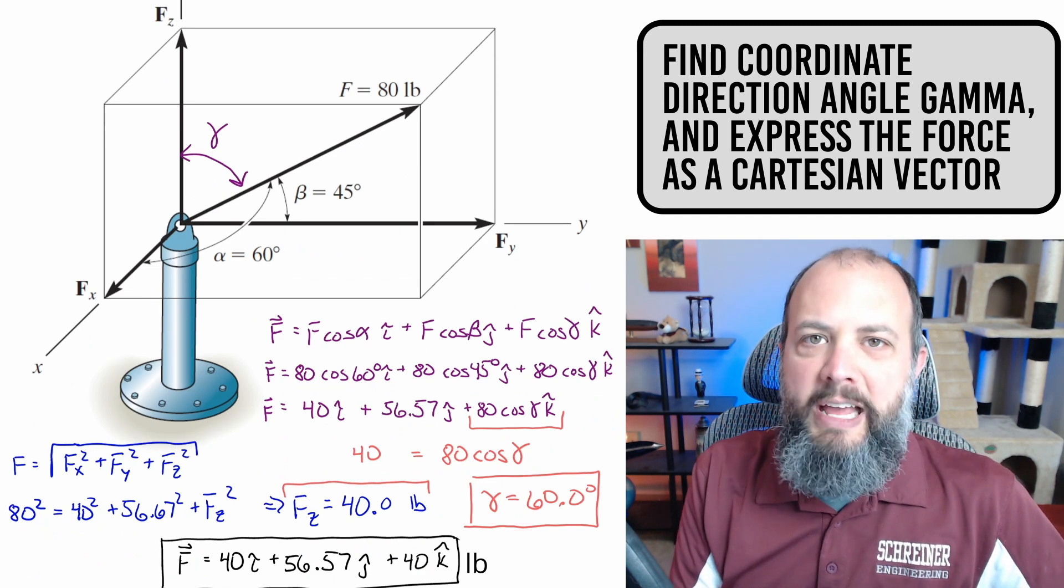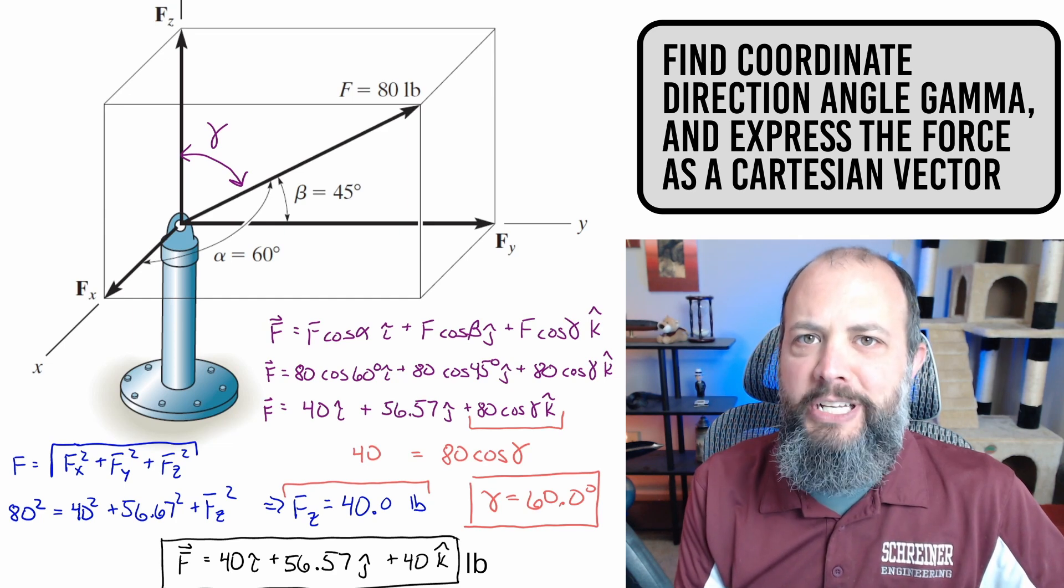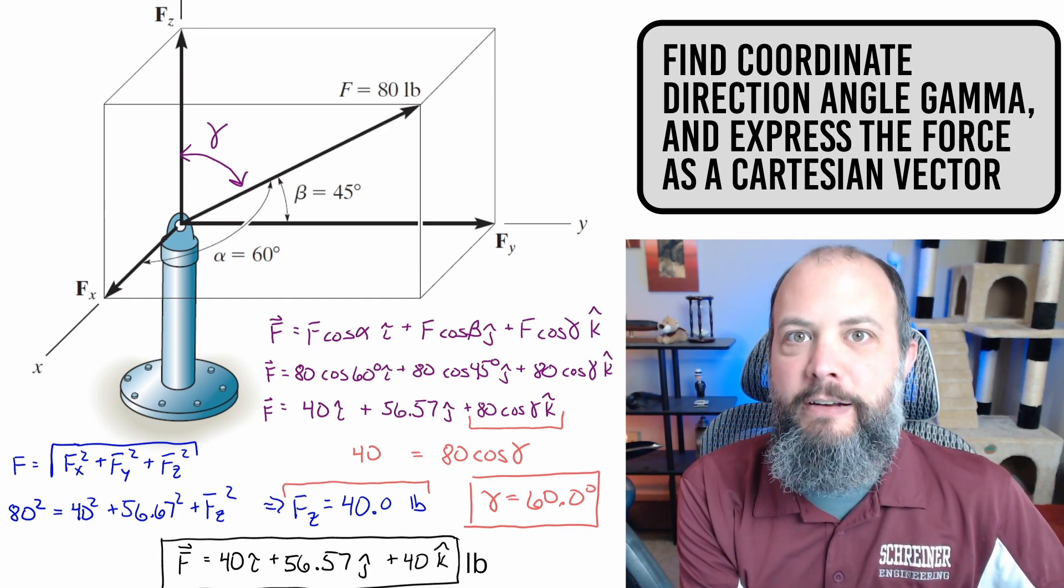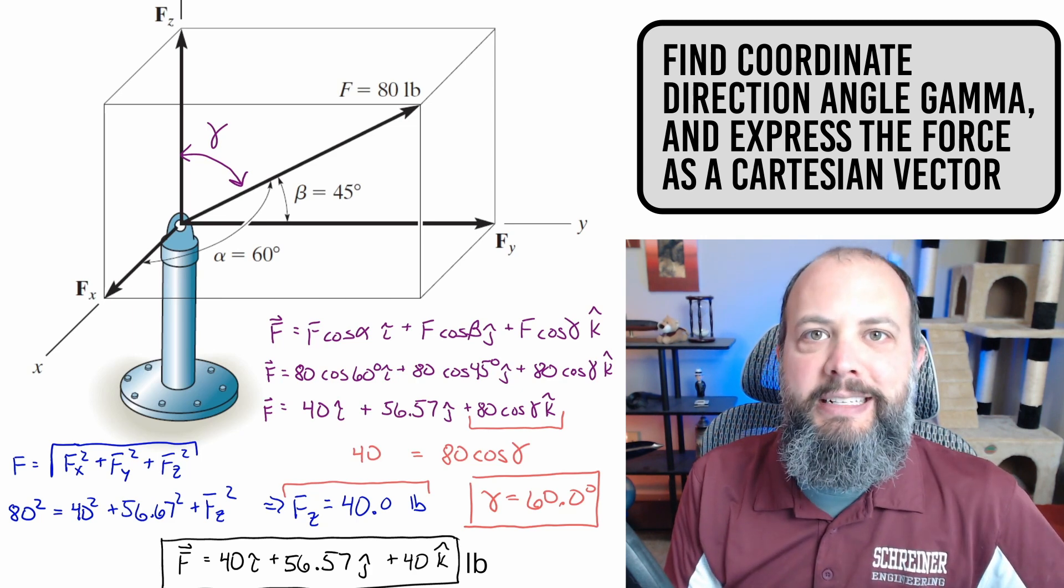For a lot of problems, you won't actually care about the angle gamma. Getting to this Cartesian vector, the I, J, K form, is usually the part that you're actually going to need for whatever you're doing. But since this problem statement asked us to also find gamma, that's why I did that extra step in the middle.